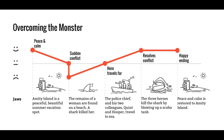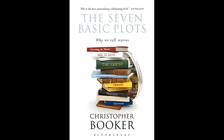Before we begin, I of course have to acknowledge where I'm getting my information from. All of the diagrams I'm working from originally came from an article written by Gavin McMauhen, and I'll put a link to that article in the description box. And Gavin took these seven basic story structures from the book The Seven Basic Plots, written by Christopher Booker.